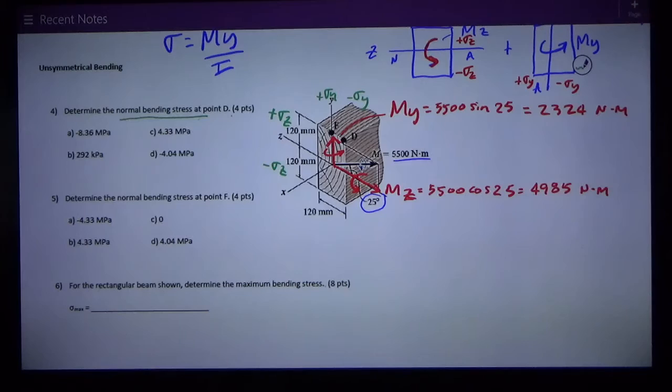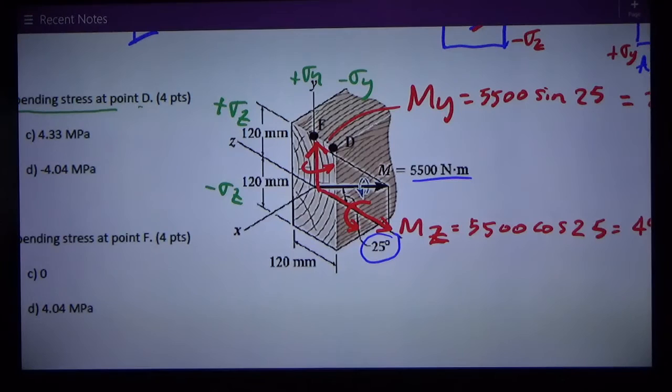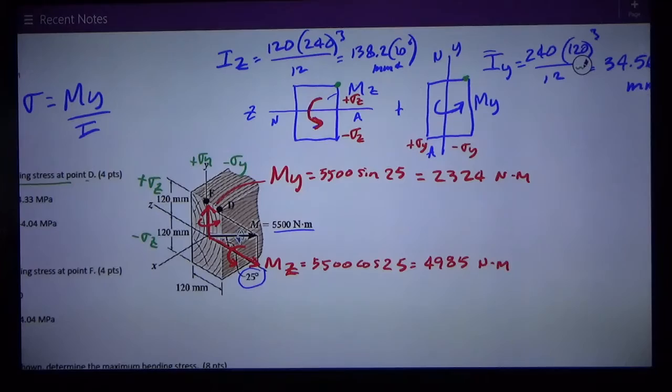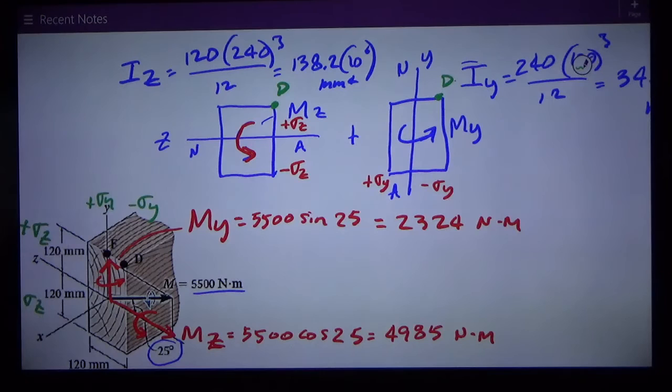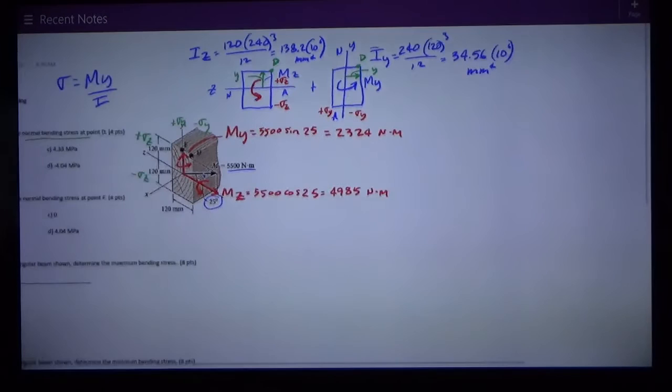First I'm asked for the normal bending stress at point D. Point D is in the upper right hand corner. I have different distances from the neutral axis. For Mz I care about this distance from the neutral axis, that y distance, and that's half of the height, that's 120. For My I care about the distance from the y neutral axis which is half of 120 or 60.